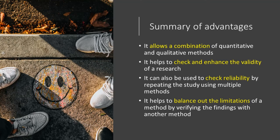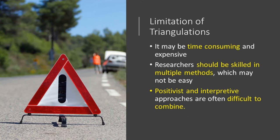To summarize the advantages of triangulation: it allows a combination of quantitative and qualitative methods, thus maximizing the benefits of more than one method. It helps to check and enhance the validity of a research, and can also be used to check reliability by repeating the study using multiple methods. It helps to balance out the limitations of a method by verifying the findings with another method. Limitations are more practical in nature — it might be time-consuming and expensive, researchers should be skilled in multiple methods which may not be easy, and positivist and interpretive approaches are often difficult to combine.